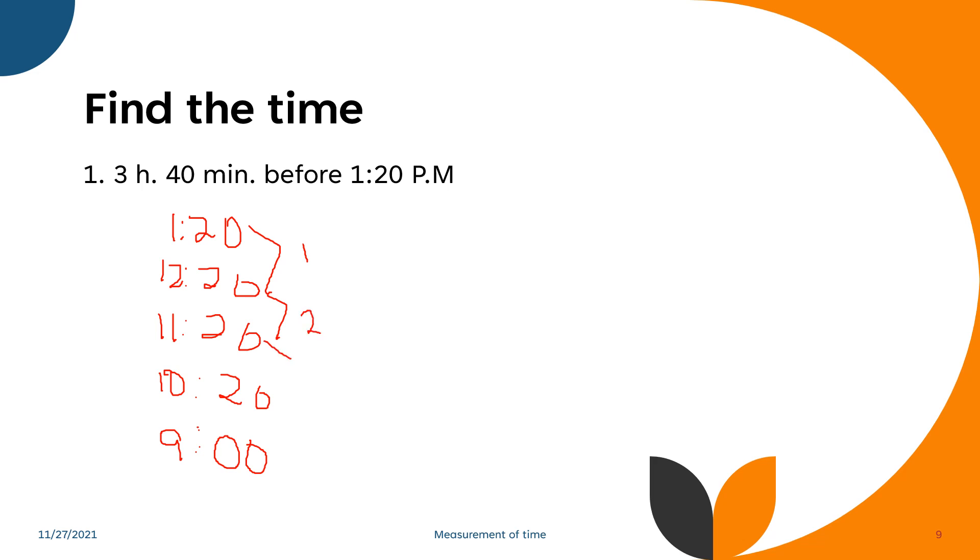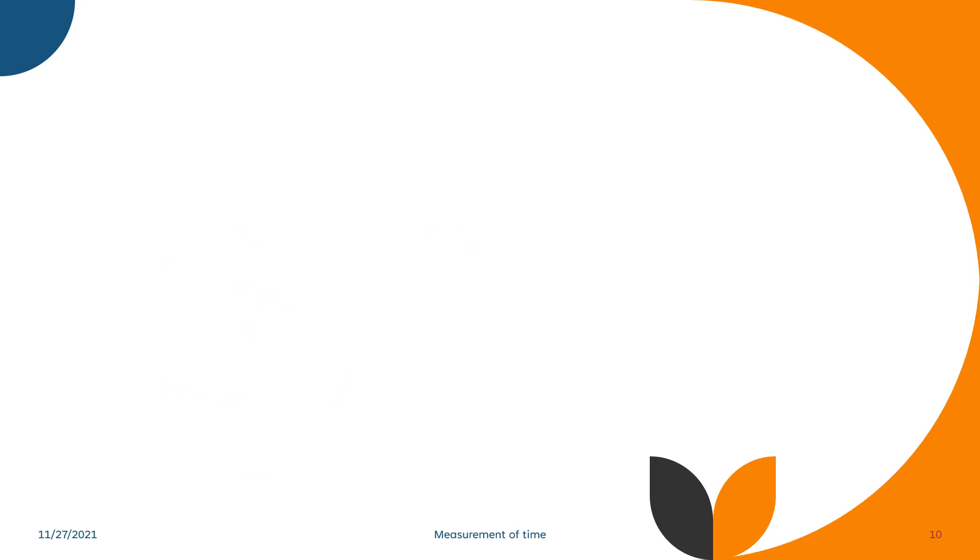The answer is 9 o'clock. Because here, so we have 1, 2, 3, and then we have here 10:20 to 10:20. Subtract the 20 minutes to 60 minutes, but 40 minutes only, so we have 9 o'clock. So that means 3 hours and 40 minutes before 1:20 p.m. is 9 o'clock a.m. So it started at 9 o'clock a.m. or in the morning.